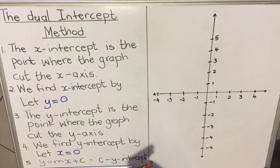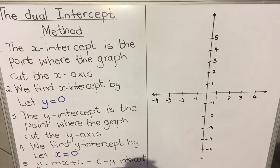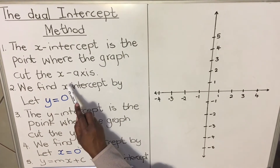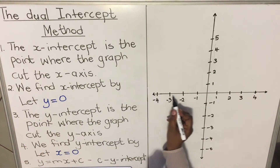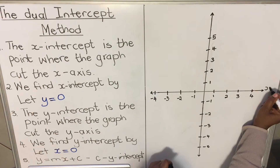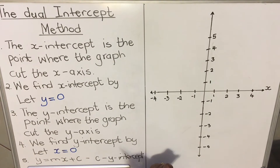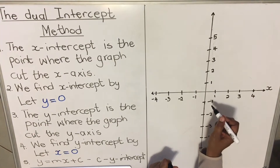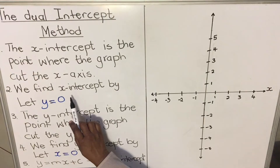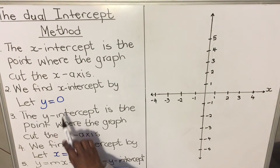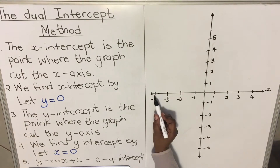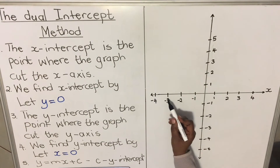The x-intercept is the point where the graph cuts the x-axis. The x-axis is the horizontal line — it is the input line. Where your graph cuts the x-axis is called the x-intercept. We find the x-intercept by letting y be zero in your equation. Where there is a y, you put zero, because on the x-axis your y value is zero.